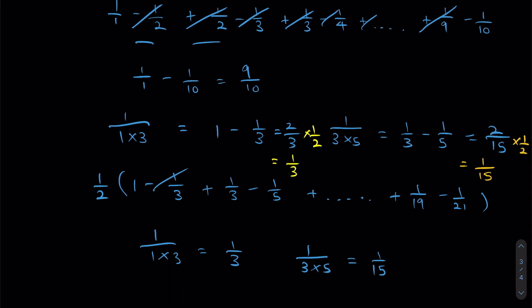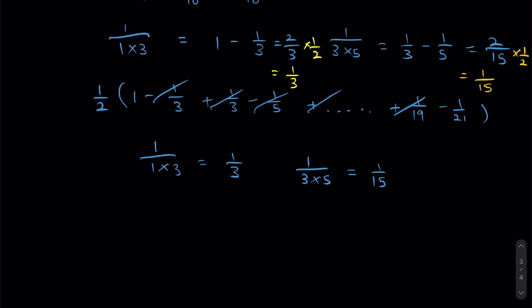And just like we did before, we're going to cancel out all the common terms, all the way until plus 1 over 19. So what are we left with? We're left with half 1 minus 1 over 21.